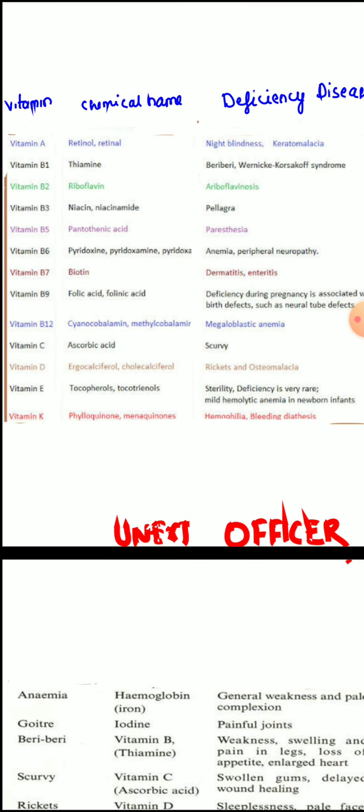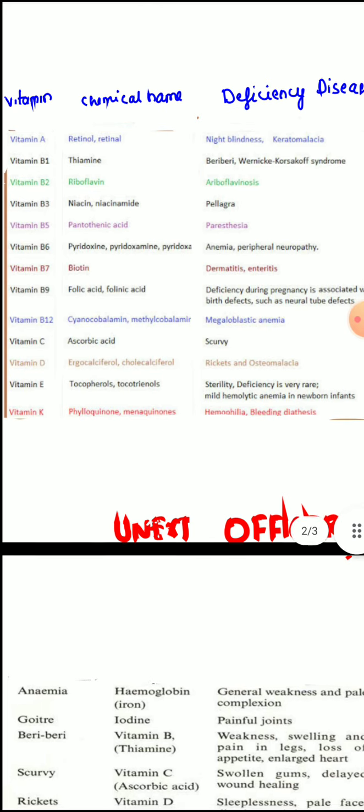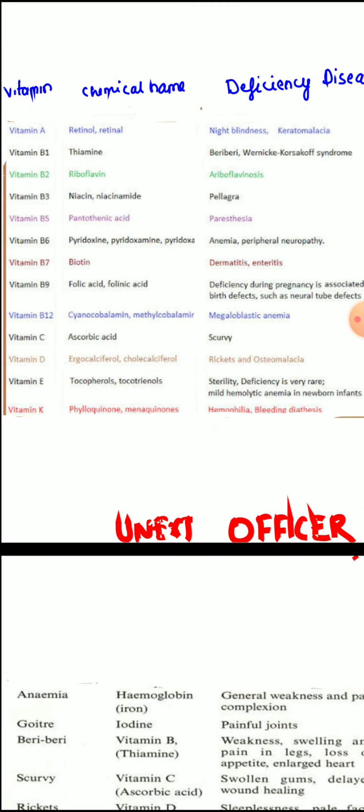About vitamin B5 or pantothenic acid deficiency: it causes parasthesia as it involves the nervous system. Vitamin B6 or pyridoxin deficiency is characterized by anemia and peripheral neuropathy. Pyridoxin deficiency is commonly caused by isoniazid, a drug used for the treatment of tuberculosis. So in patients starting antitubercular therapy, pyridoxin is given along with isoniazid.